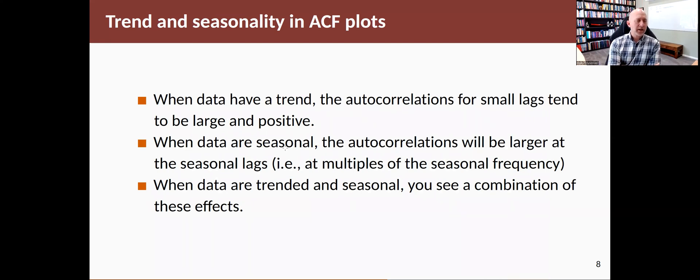Okay, so when we have different types of data, the patterns in the data will show up in the autocorrelation function. So if data have a trend, the autocorrelations for small lags tend to be quite large and positive because values that are close together in time will also tend to be close together in value. When data are seasonal, the autocorrelations will be large at the seasonal lags, at multiples of the seasonal frequency. And if they're both trended and seasonal, you'll see some combination of those.